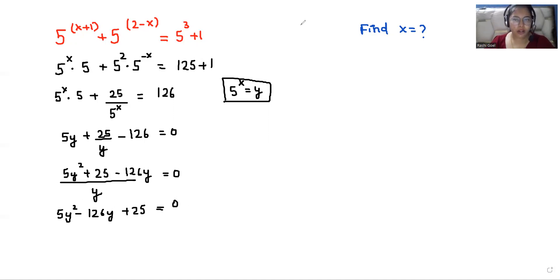Now it looks like a quadratic equation. So we can write the middle term as 5y^2 minus 125y minus y plus 25 equals 0. From the first two I can take 5y as common.